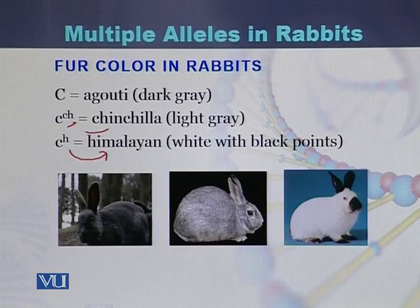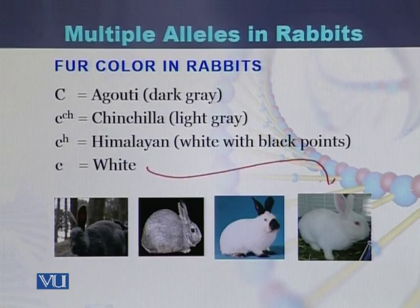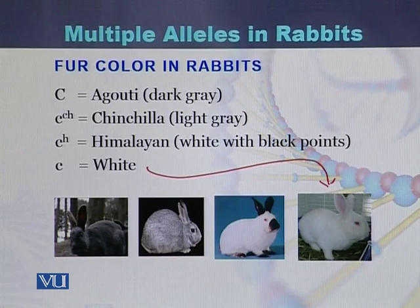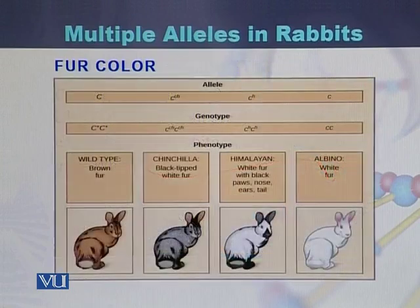If there is only the h allele, it is called Himalayan. Himalayan rabbits have small black spots on the nose and feet. The fourth allele is recessive c: if the allele c is in recessive form, the fur color of the rabbit will be white, or it will be albino.